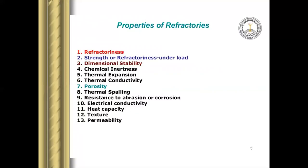What are the important properties that refractory materials should possess? There are almost 13 important properties: refractoriness, strength under load and dimensional stability, chemical inertness, thermal expansion, thermal conductivity, porosity, thermal spalling, resistance to abrasion or corrosion, electrical conductivity, heat capacity, texture, and permeability. These are the important properties of refractory materials.